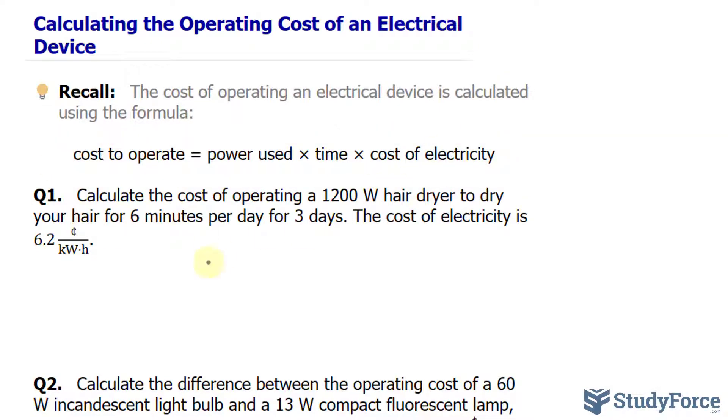So let's put this all together. We have the cost is equal to the power used as 1200 watts times the time, and in this case it's six minutes per day for three days, which means 18 minutes altogether.